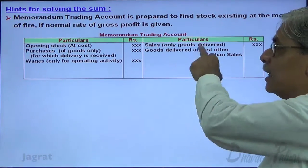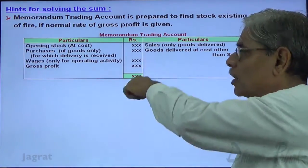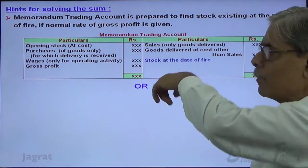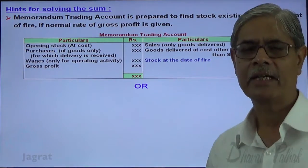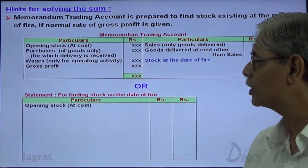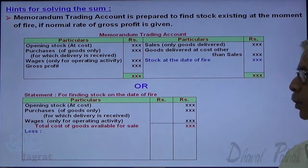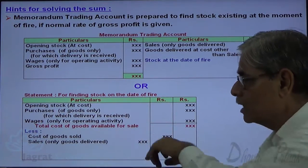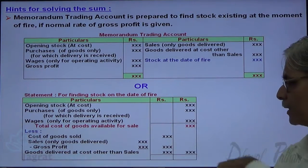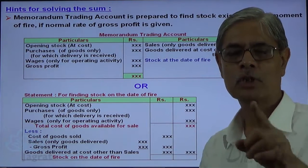After recording all these things, sales multiplied by rate of gross profit gives you the gross profit. You total this side, write the total on the other side, and find the missing item — that is stock at the date of fire. Alternatively, you can prepare a statement: opening stock plus purchases plus wages equals total cost of goods available for sale, minus cost of goods sold (sales minus gross profit), minus goods delivered at cost other than sales. If you deduct these, you will get the stock on the date of fire.